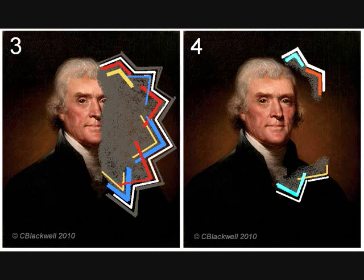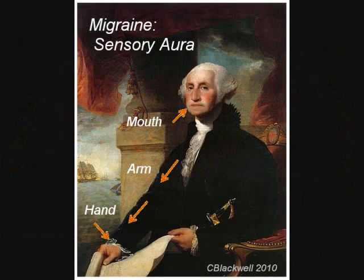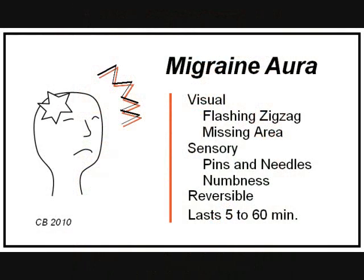Rarely there can be a blackout of vision, but that must be distinguished from other worrisome causes, like stroke. Some people have an aura that is not visual. Instead, it involves sensations of numbness and tingling that march down the arm, or numbness of the hand or around the mouth. For some, there is a feeling of heaviness of the limb, or there may be difficulty speaking. To recap: the features of the aura include positive features such as the flickering light, and negative features such as the missing area — the scotoma. Visual symptoms occur on one half of vision affecting both eyes, while sensory symptoms occur only on one side. All the features are reversible and symptoms usually last from 5 to 60 minutes.